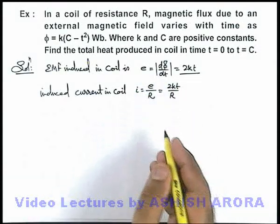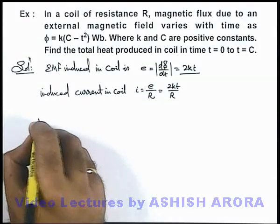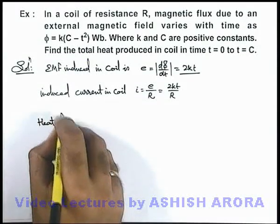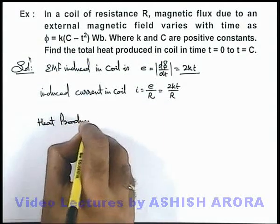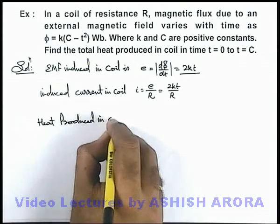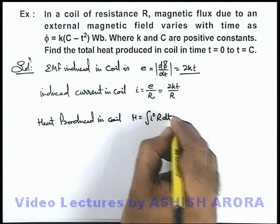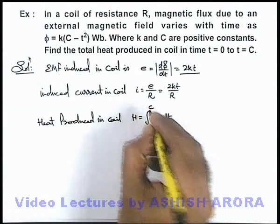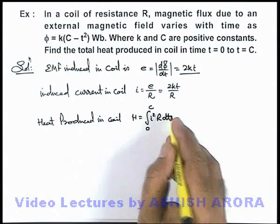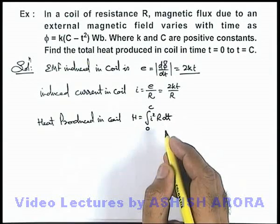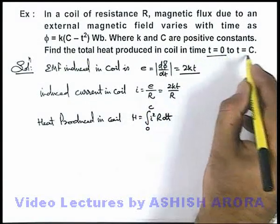And if we have got the current as a function of time, then we can easily calculate the heat produced in the coil by using the expression H = ∫i²R dt from zero to C, which we already studied in thermal effects of electric current. So we are integrating within time zero to C.